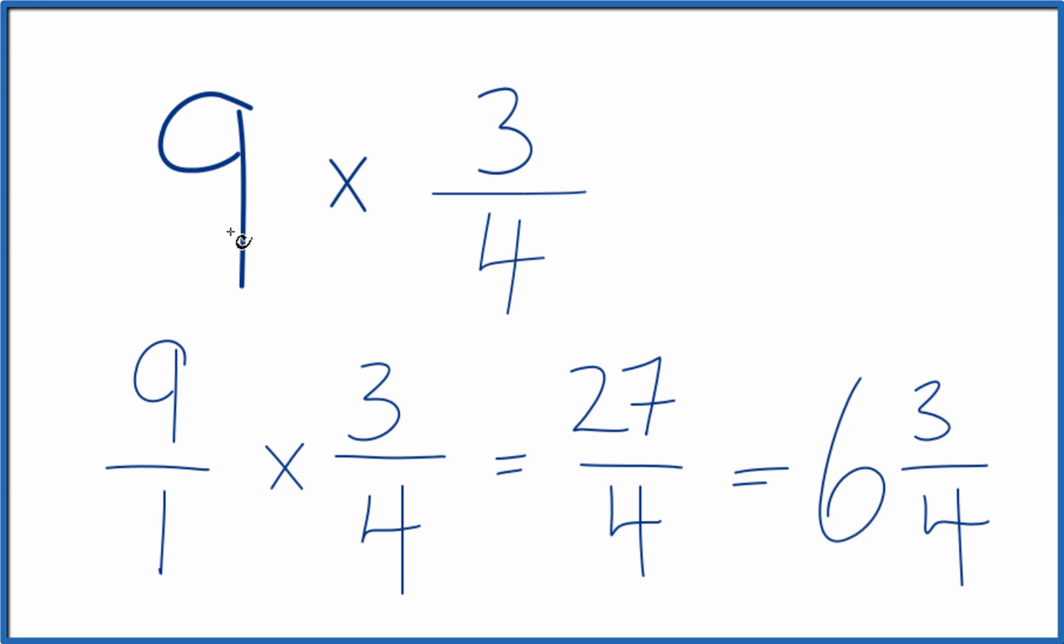So that's it. That's how you multiply 9 times 3 fourths. You get the fraction 27 fourths, or the mixed number 6 and 3 fourths. This is Dr. B. Thanks for watching.